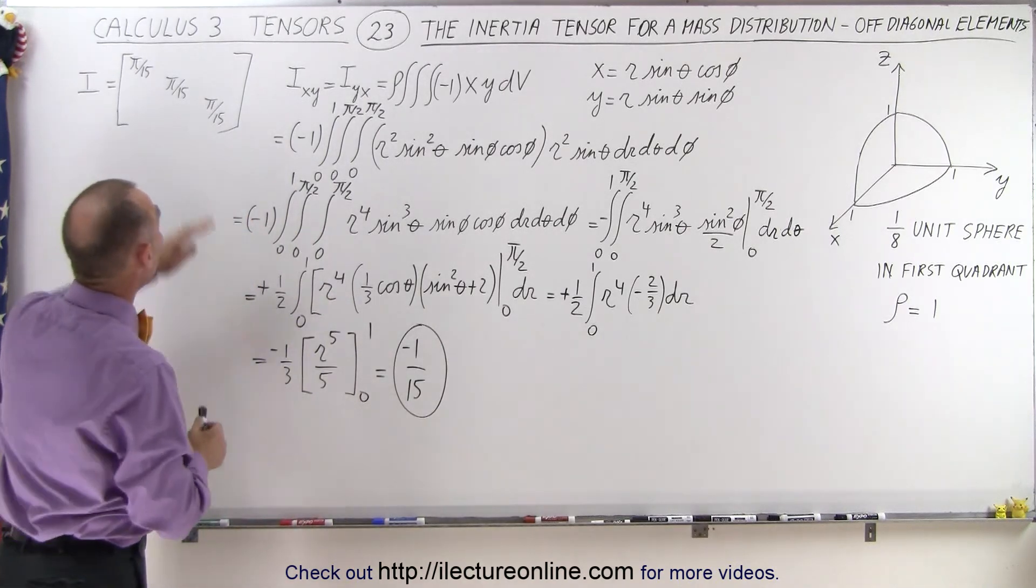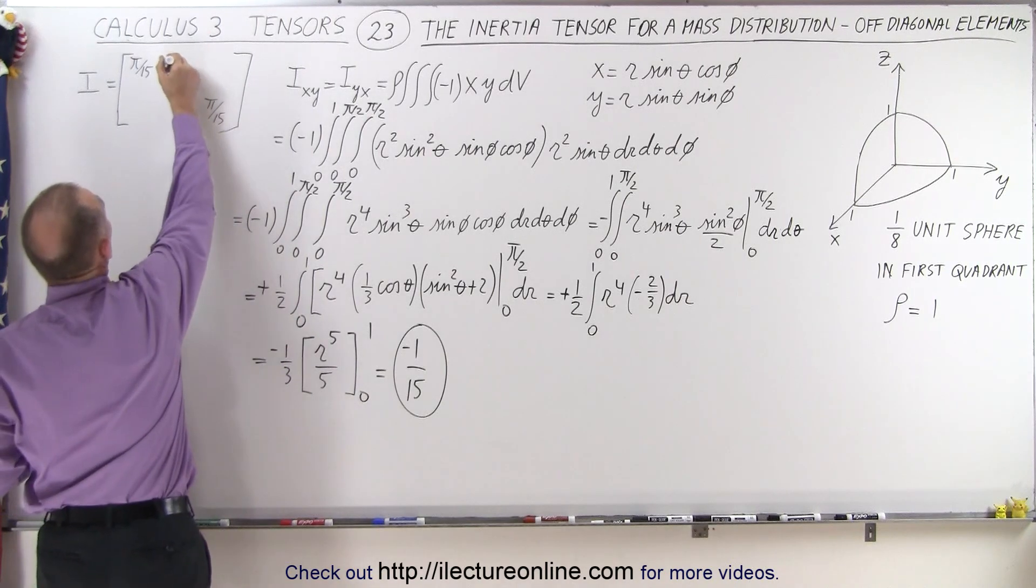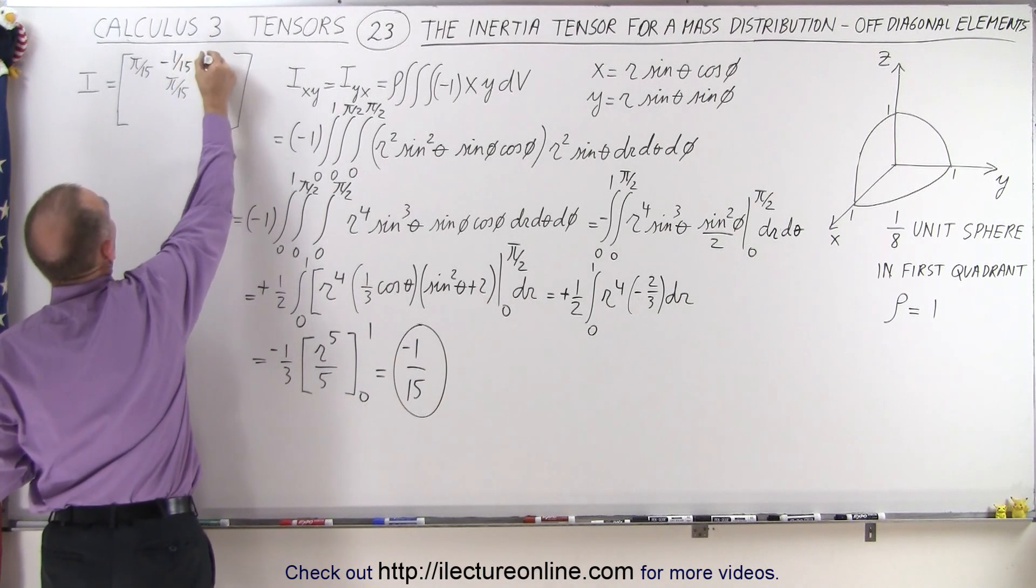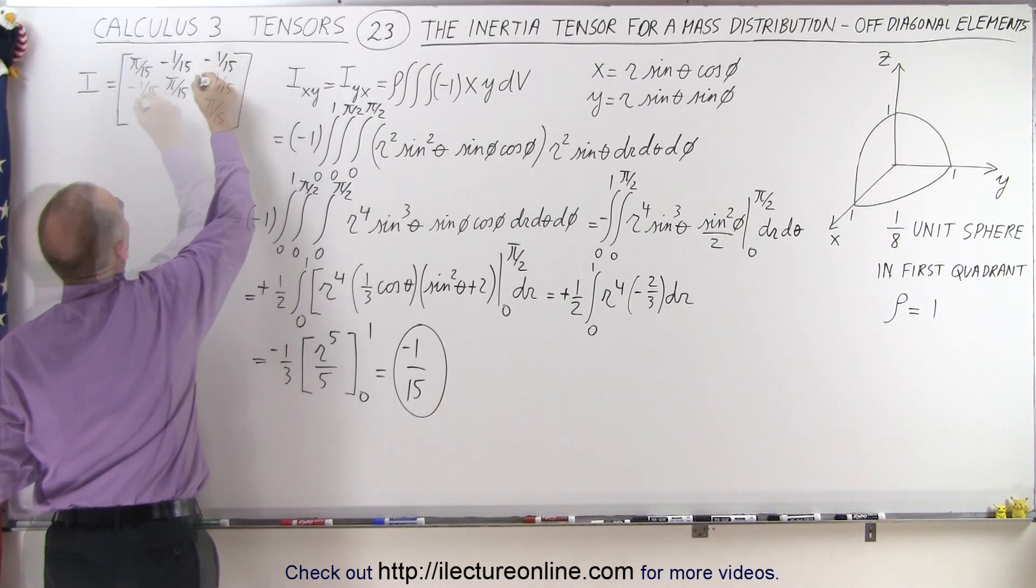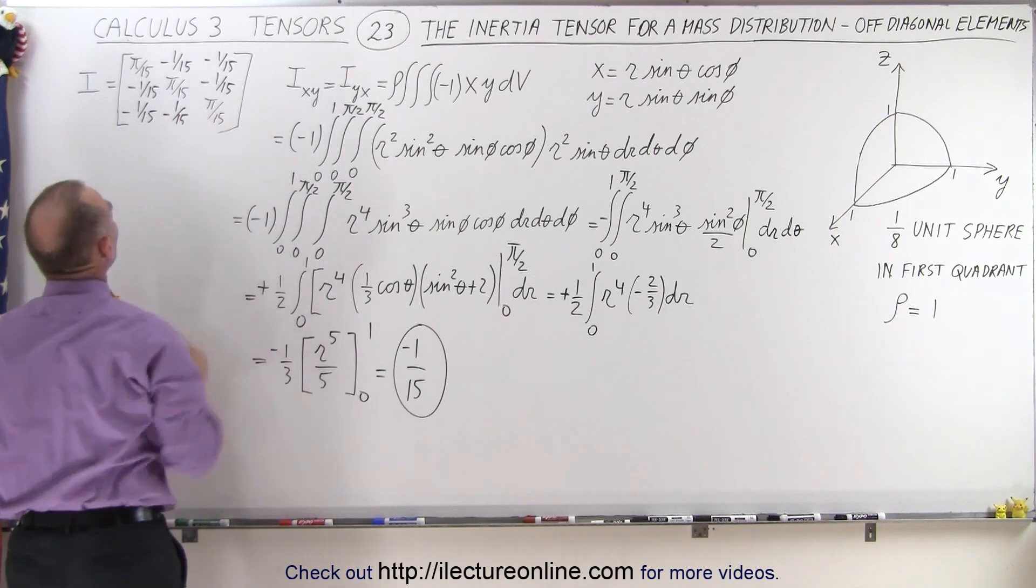Which means that all the off diagonal elements are going to be minus 1 over 15. So minus 1 over 15, minus 1 over 15, minus 1 over 15, and minus 1 over 15, like that.